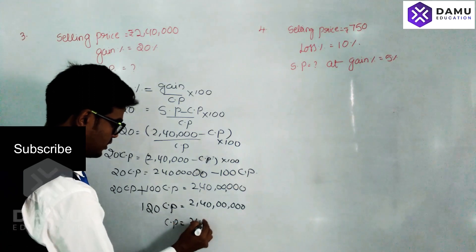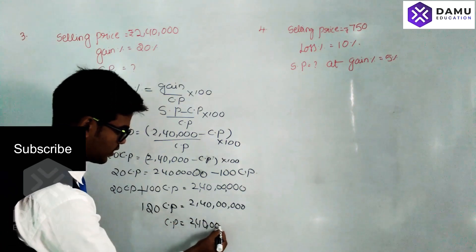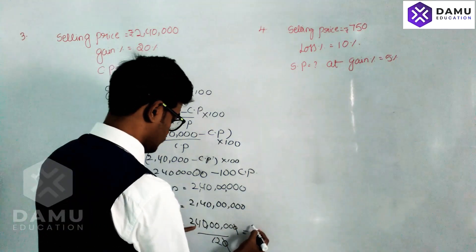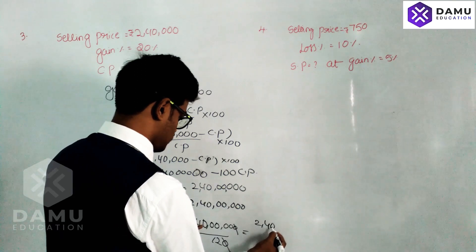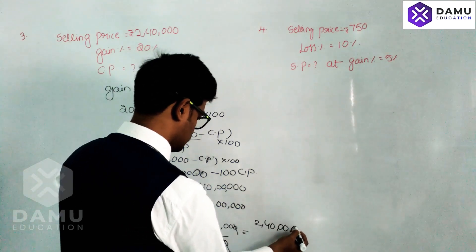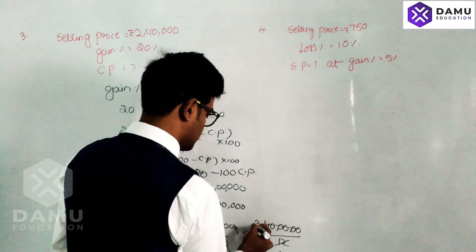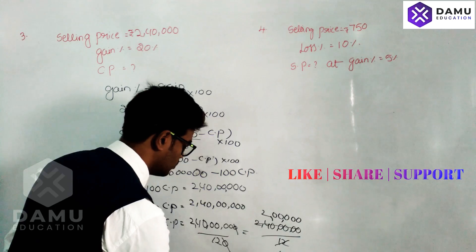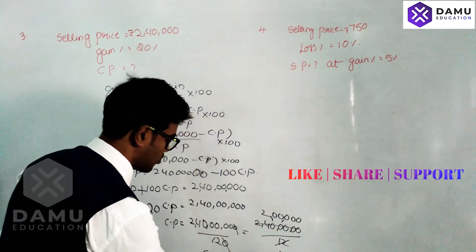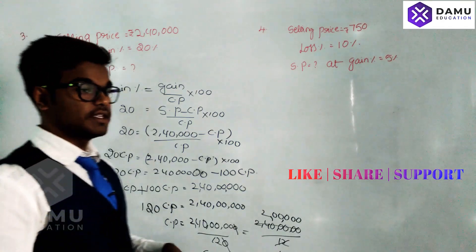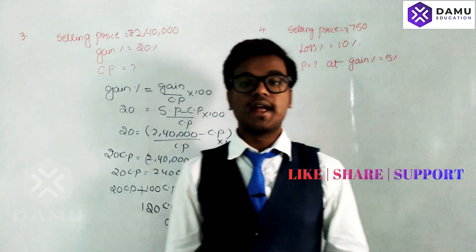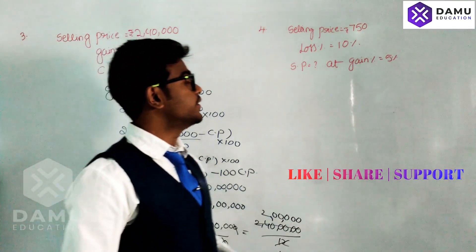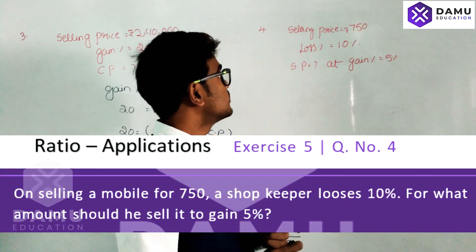So CP equals two crore forty lakh divided by 120. Cancelling zeros: 24 divided by 12 equals 2, so the cost price is 2 lakh rupees. He bought the plot at 2 lakhs and sold it at 2 lakh 40 thousand, making a profit of 40,000 rupees.